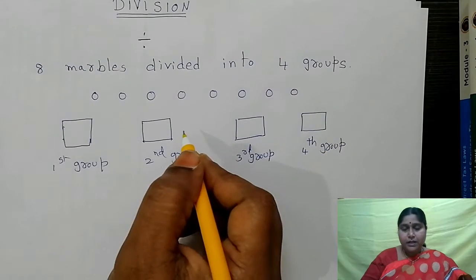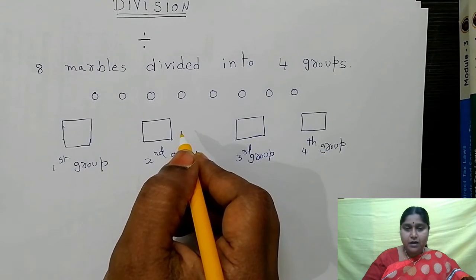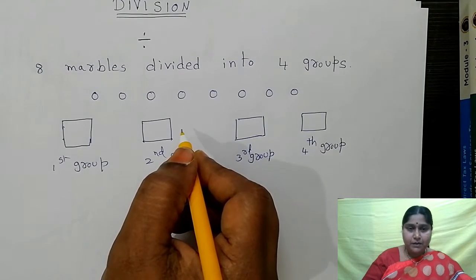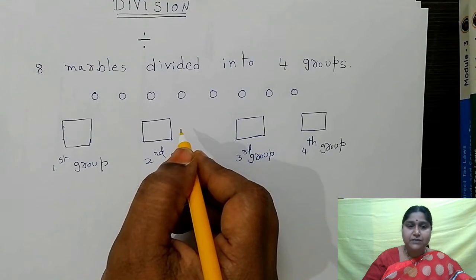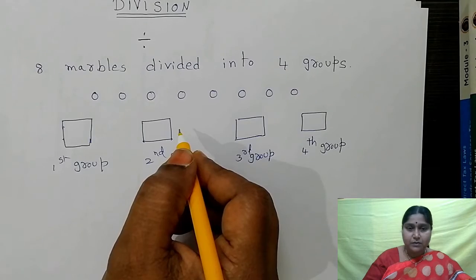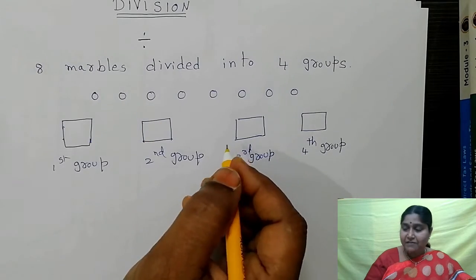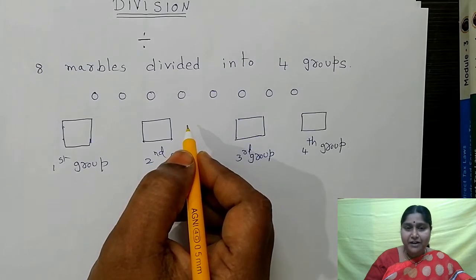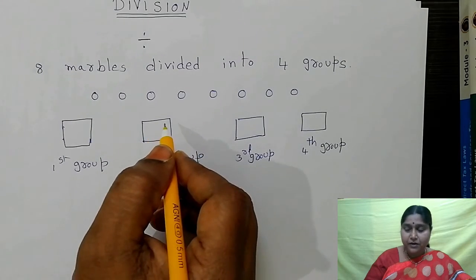Now, the process of sharing or dividing things equally is called division. Here, 'equally' is very important. Equal sharing is division. Now see, I am dividing these 8 marbles into 4 groups. See carefully how I am dividing.